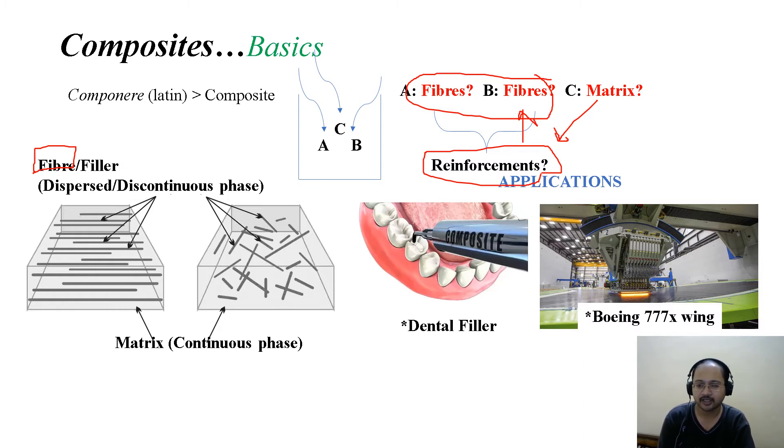For typical applications, you can see dental fillers where short filler pastes are used to fill dental cavities. Also, if it's a very stiff fiber like carbon fibers, with the help of a robotic arrangement, long fiber composites can be made. This typical structure is like the part of a wing of a Boeing 777X.